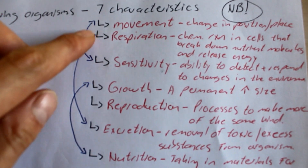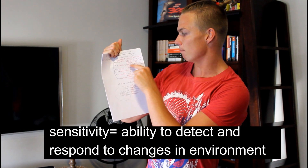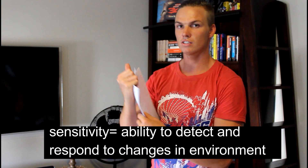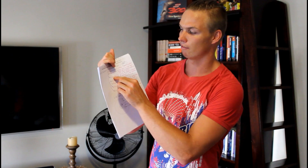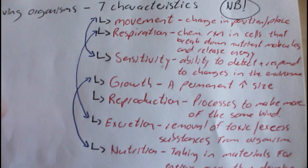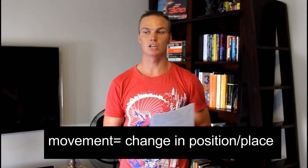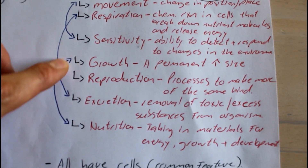A nice way to remember these seven characteristics is to link them to each other. I've linked movement to sensitivity — sensitivity is the ability to detect and respond to changes in the environment. Say you're sitting on the couch and you start to feel hungry; hunger is a stimulus and you respond to it by getting up and going to the fridge. That's movement. I've also linked growth and nutrition because you eat and you grow.